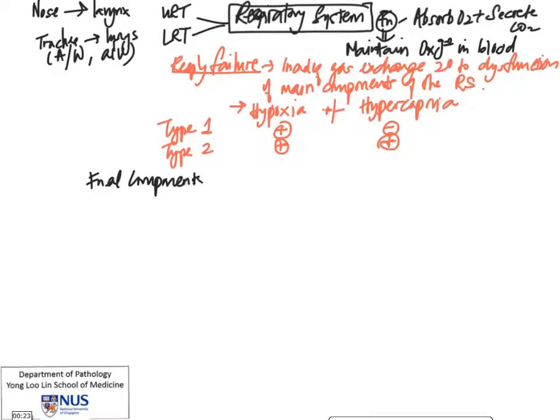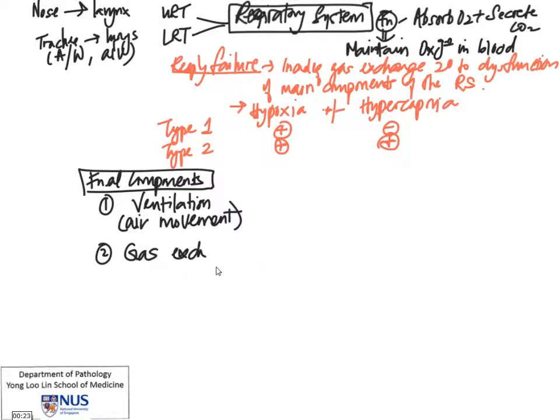Let's look at the functional components required for optimal absorption of oxygen and secretion of carbon dioxide. First, there must be ventilation, which means movement of air. Second, gas exchange must occur—movement of gas from the alveolar spaces to the blood and from the blood to the alveolar spaces.